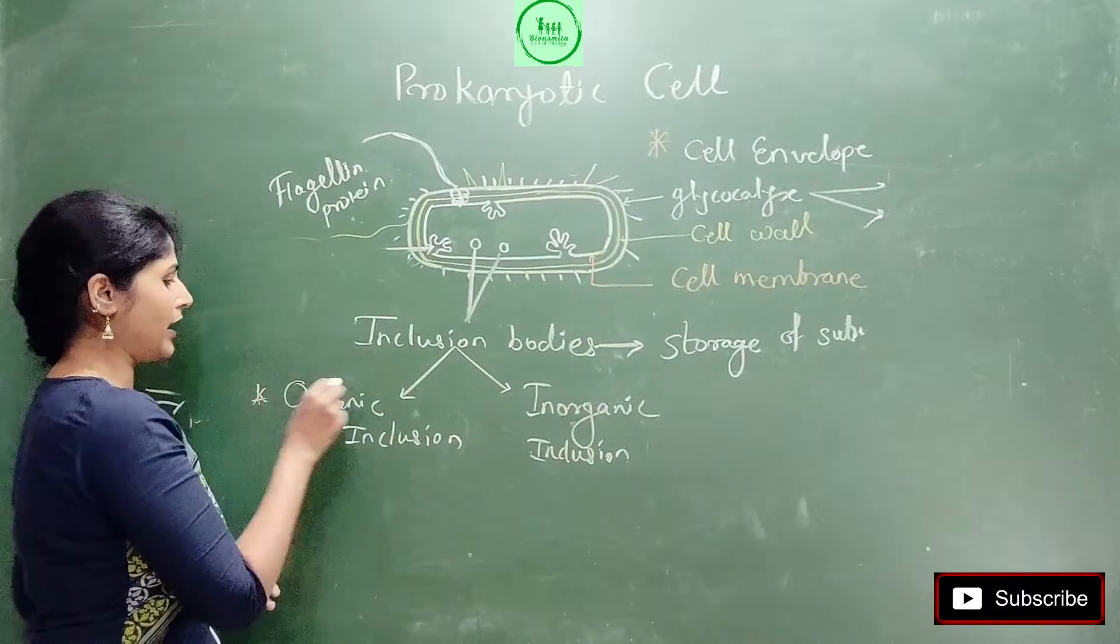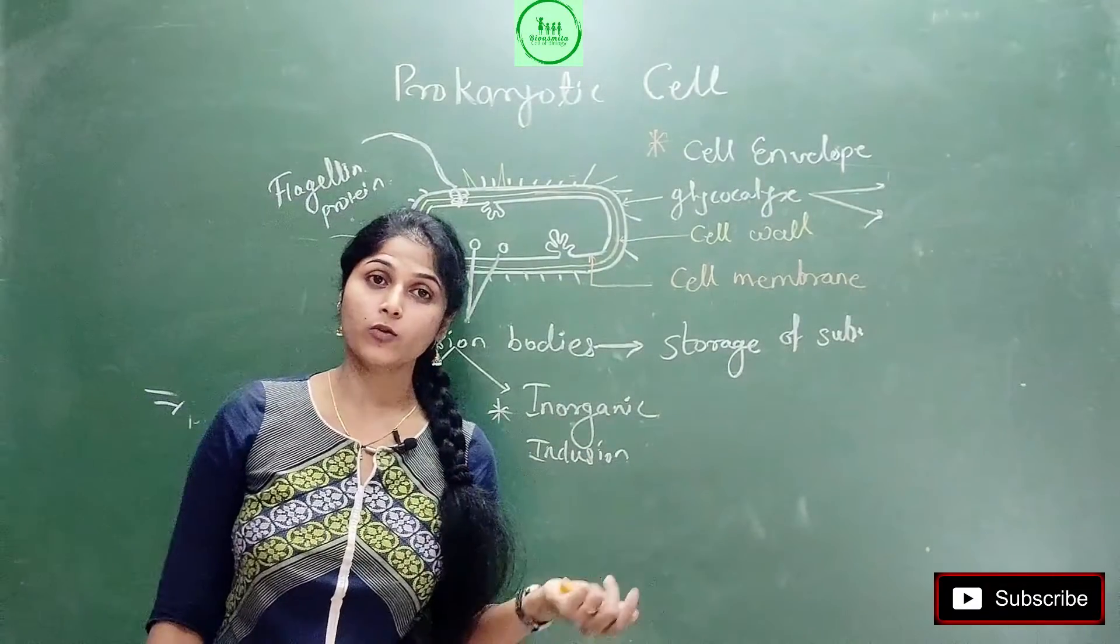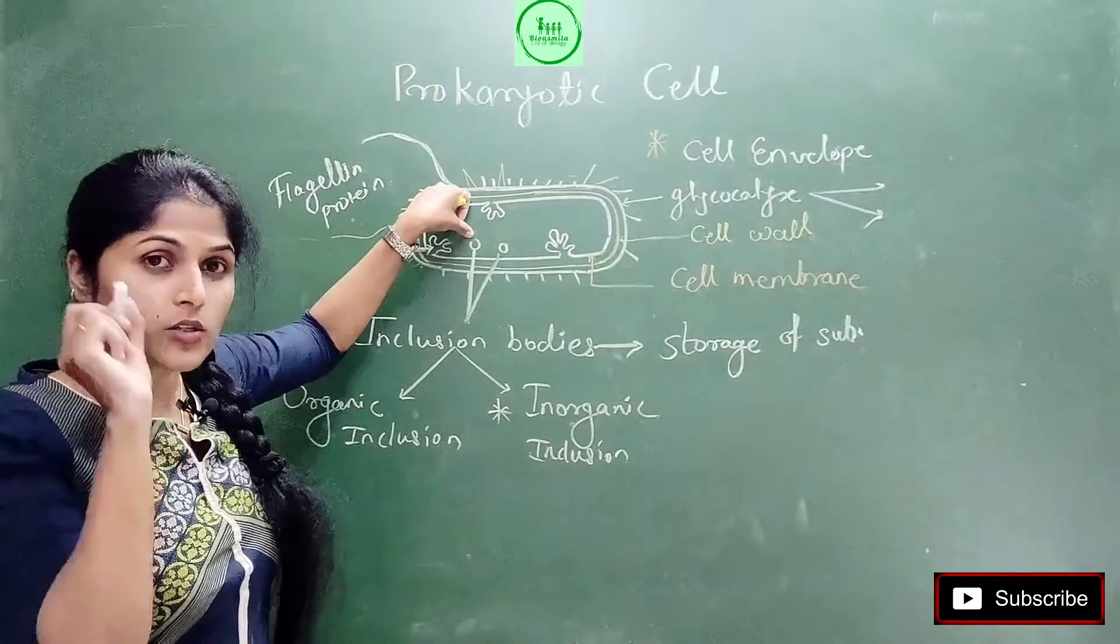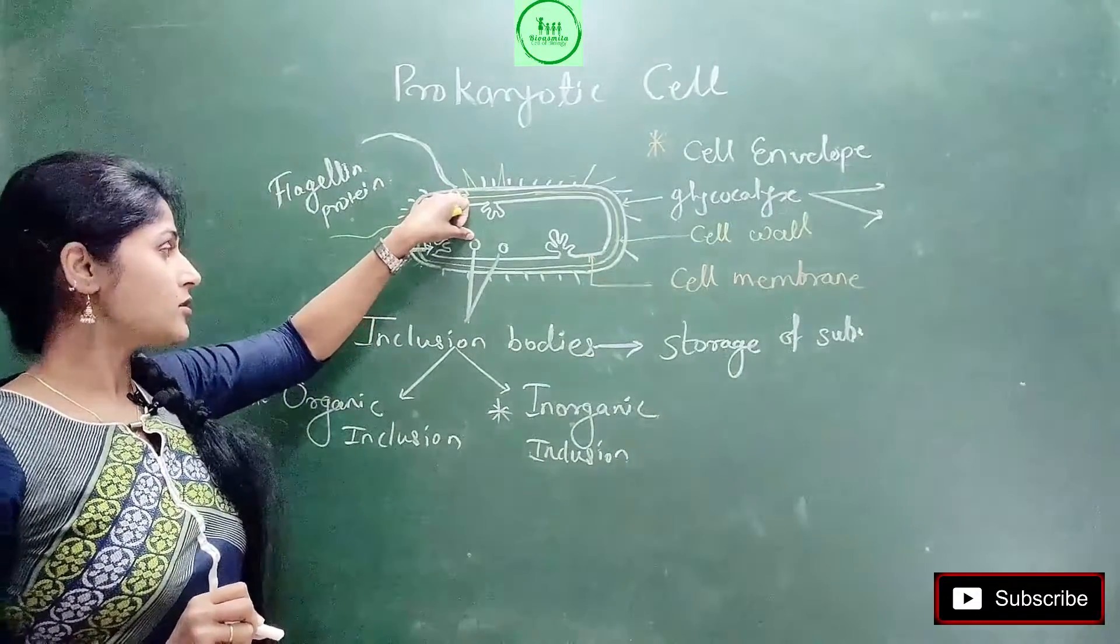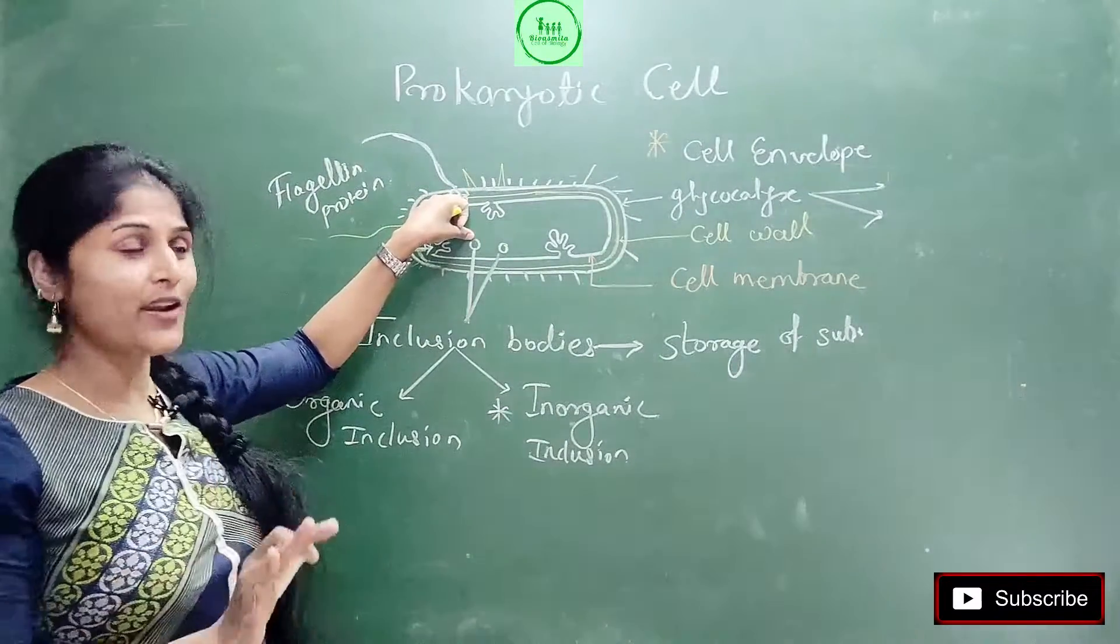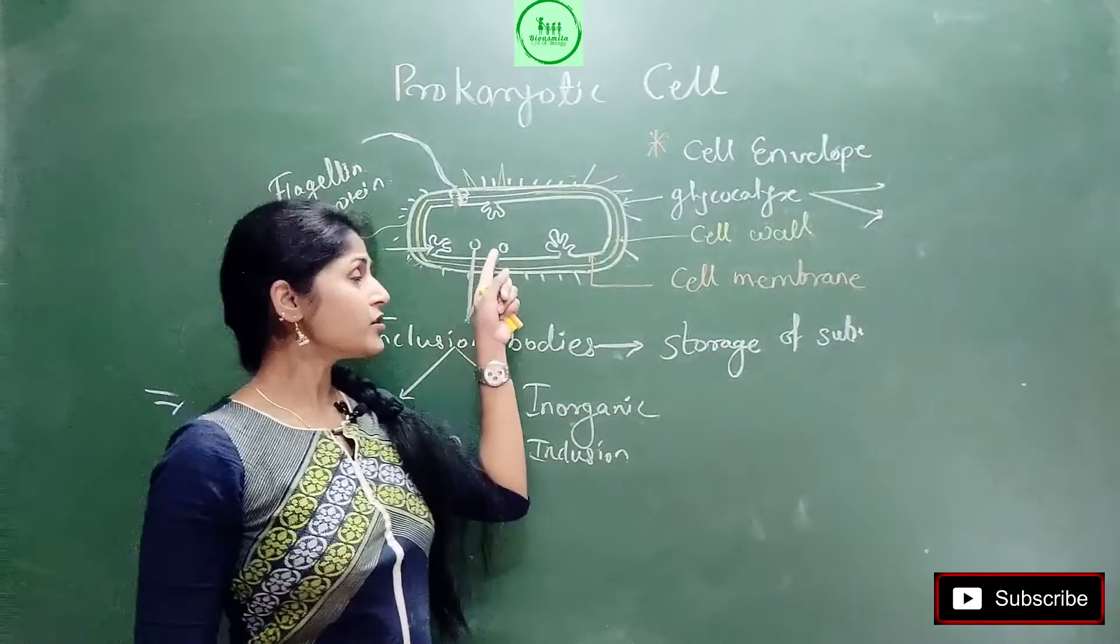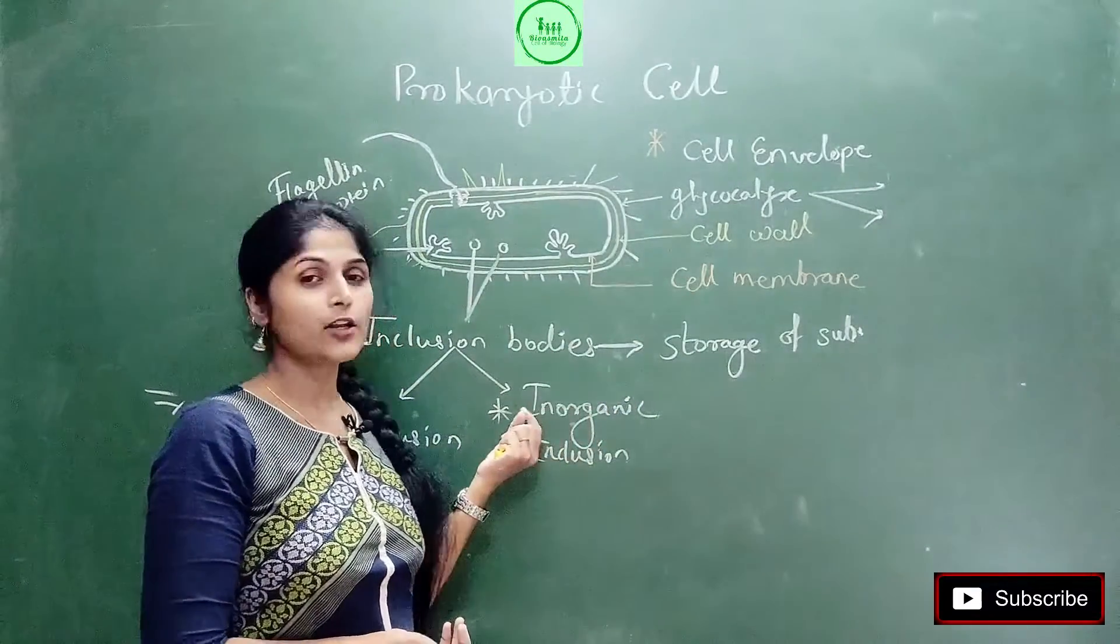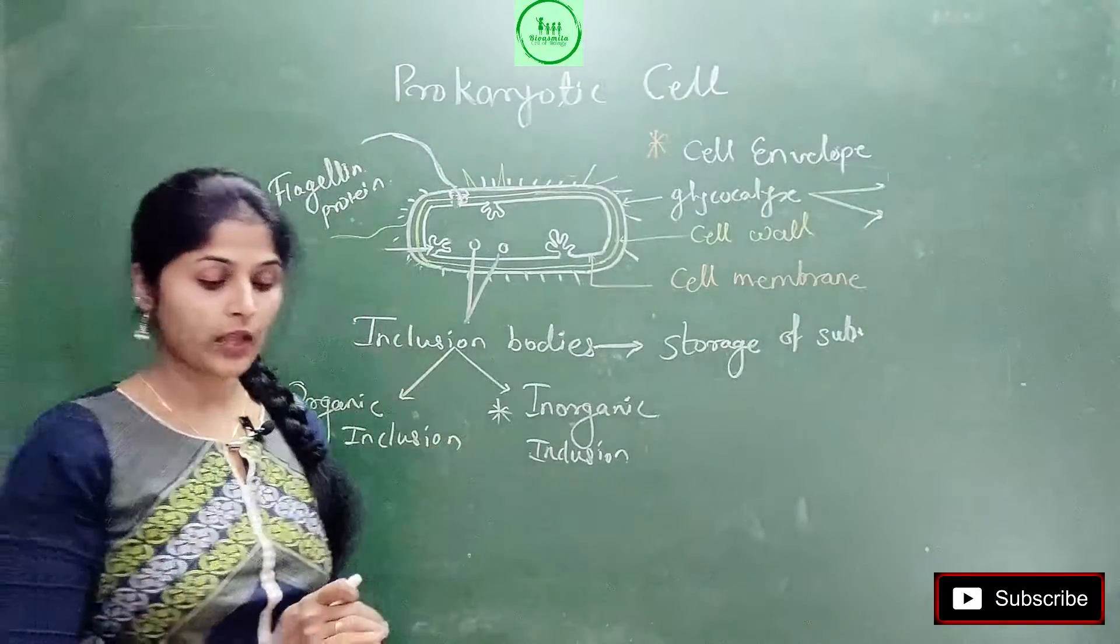This is about storage. Now see, you know there are organic compounds and inorganic compounds. Suppose this inclusion body is there - this body is storing organic substances, then this inclusion body is called organic inclusion body. And if this inclusion body is storing inorganic substances, then it is called inorganic inclusion bodies.